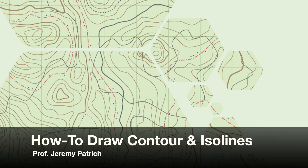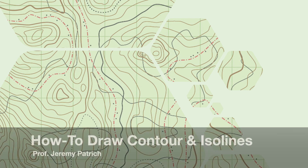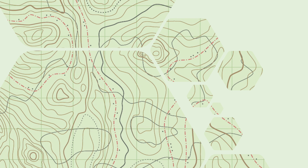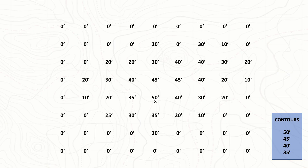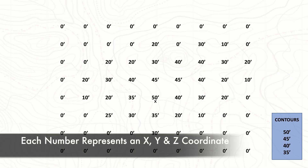Hey there guys, it's your favorite backyard geographer again. We've learned a lot about contour lines and maps, but have you ever wondered how do we make a map to begin with — how do we connect those dots and make those contour lines? Well, you're in the right place. We're going to learn today how to make contour and iso lines. To begin, the first thing we need is a bunch of data. What I have here is a bunch of survey markers — random elevation points — and our job is to turn this data into a map.